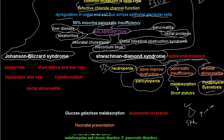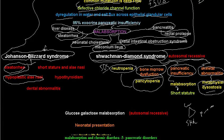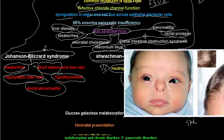The third syndrome is Johanssen-Blizzard syndrome, a very rare condition. Its features include a hypoplastic nose, short stature due to malabsorption, hypothyroidism, and dental abnormalities. The nasal abnormalities are a characteristic feature of this syndrome.